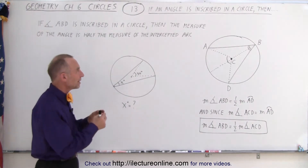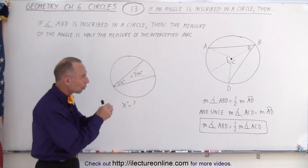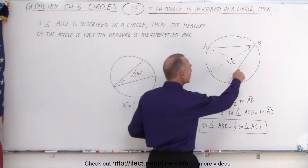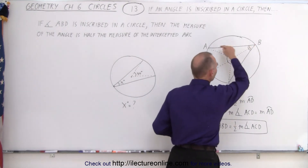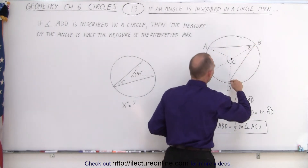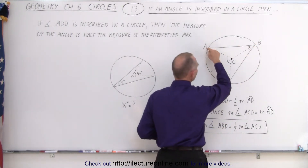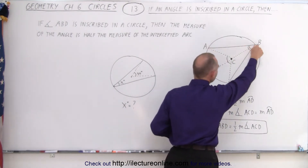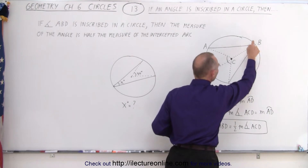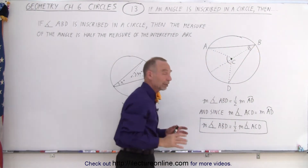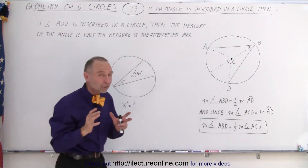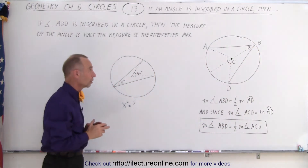That means that the corner of the angle is right on the edge of the circle, like in this example. Here we have the angle ABD, and the corner of the angle is right on the circle. That's what we mean by inscribed in a circle.